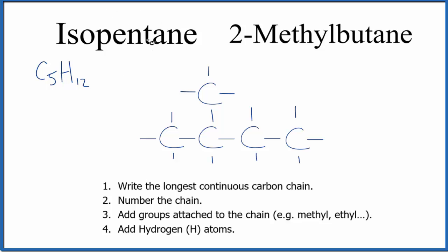Isopentane is an older name. It's not the IUPAC name. That's 2-methylbutane. These two are the same compound, the same structure organized the same way. It's just this is an older name.